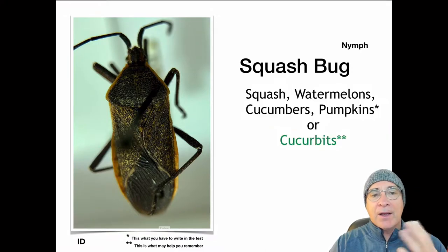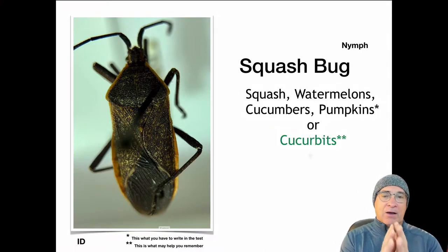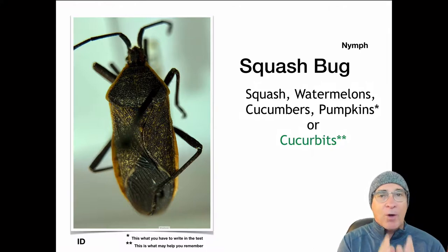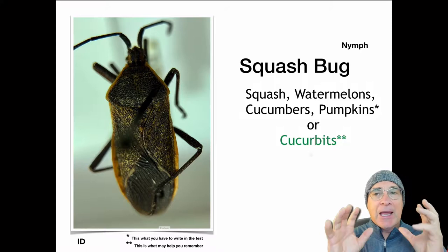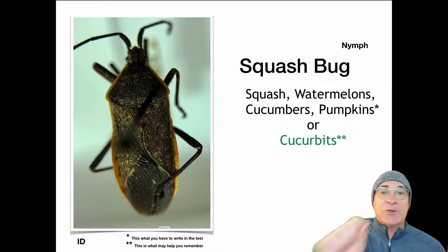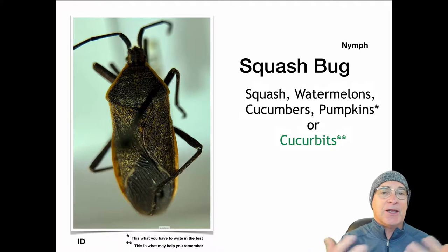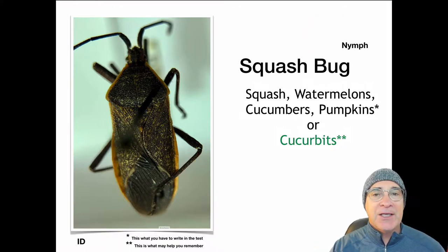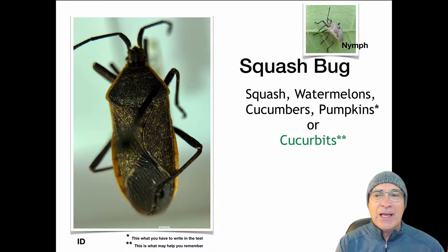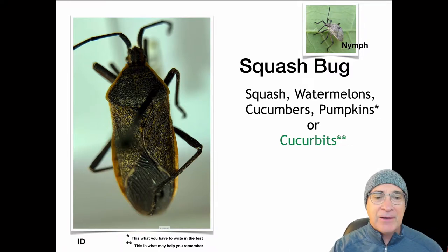The squash reminds me of cucurbits, and cucurbits are what they eat: squash, watermelons, cucumbers, and pumpkins. One asterisk means that's what you have to write down; two is something that'll help you remember. The nymphs, if you happen to see them, they're going to look a lot like the adult, but probably a lighter color and a little bit smaller.